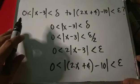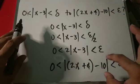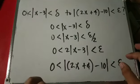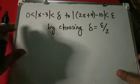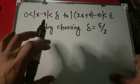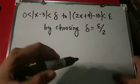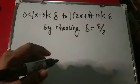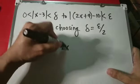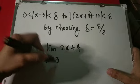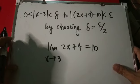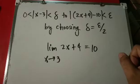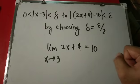Replace negative 6 with plus 4 minus 10 — since negative 6 equals plus 4 minus 10 — so we have the absolute value of 2x plus 4 minus 10 is less than epsilon. Yes, we can go from the absolute value of x minus 3 is greater than 0 but less than delta, to the absolute value of 2x plus 4 minus 10 is less than epsilon, by choosing delta equal to epsilon over 2. We have now proved that the limit of 2x plus 4 as x approaches 3 is 10. That was a fairly simple proof, but it hopefully explains the strange wording and shows a good way of approaching these kinds of proofs.